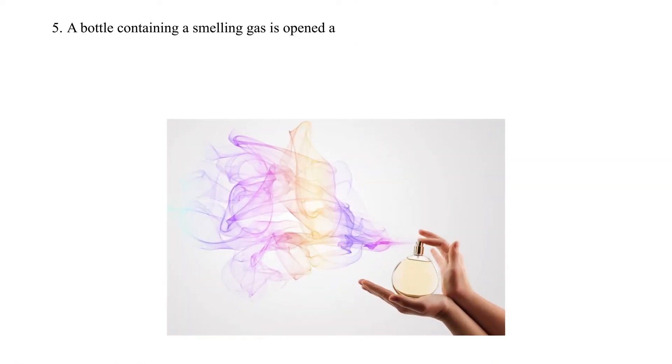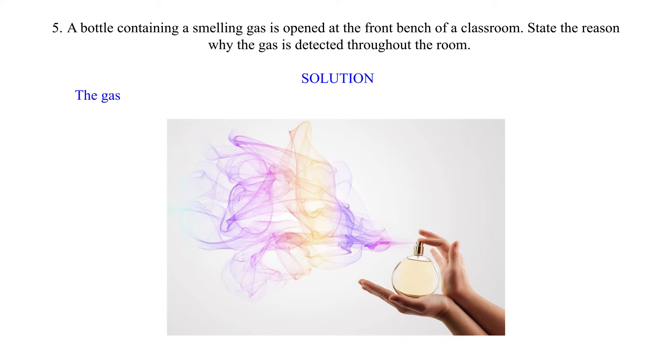Question 5: A bottle containing a smelling gas is opened at the front bench of a classroom. State the reason why the gas is detected throughout the room. Solution: The gas diffuses from the region of higher concentration to a region of low concentration.